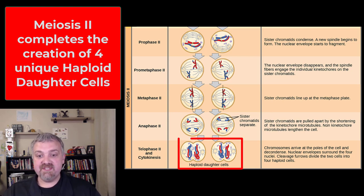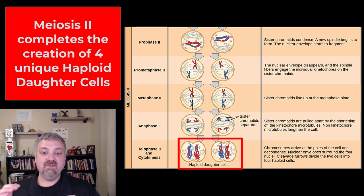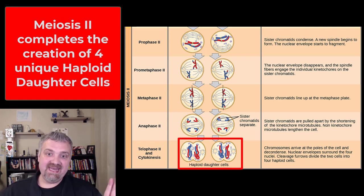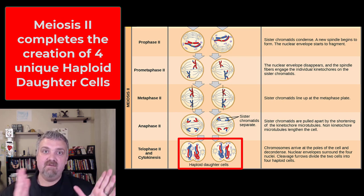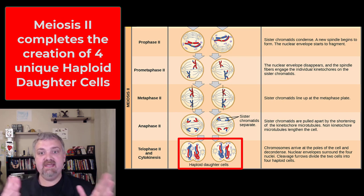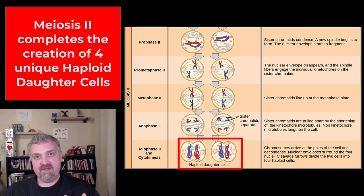Each of those four cells — look at the colors, the blue and the red, the mismatches there — each of those four cells is a unique combination of your mom's mom's DNA and your dad's dad's DNA.